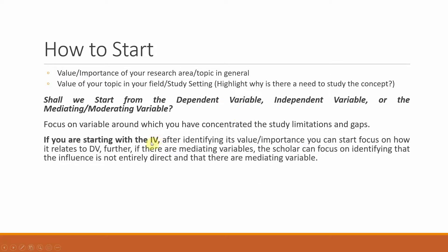For instance, if your gaps revolve around your independent variable, then you should start from your independent variable by identifying its value and importance. After you have identified the value and importance of the independent variable, your focus should be how it relates to the dependent variable. Once you have done this, if there are any mediating variables in your study, scholars can focus on identifying that the influence is not entirely direct — that the independent variable does not directly or totally impact the dependent variable, but rather the impact of IV on DV is through other variables referred to as mediating variables.